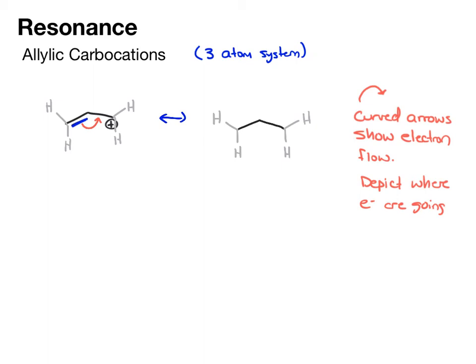We can move lone pairs and pi bonds. I moved the pi bond and swung it over here. Now this carbon has its octet - it's happy. But I took electrons out of this carbon, so now this carbon has a void, and the positive charge goes there.